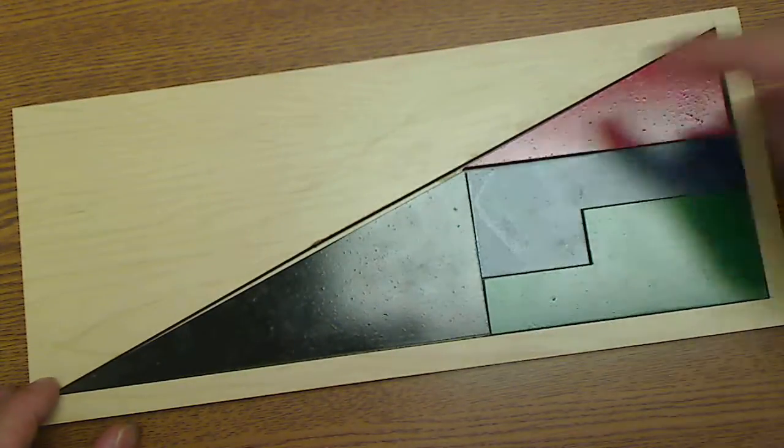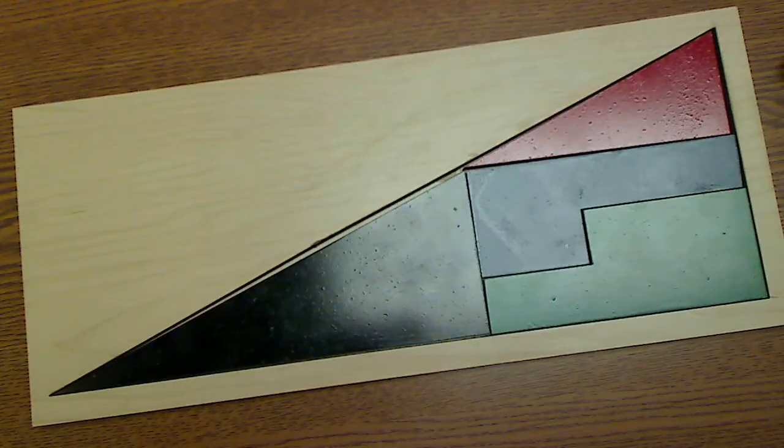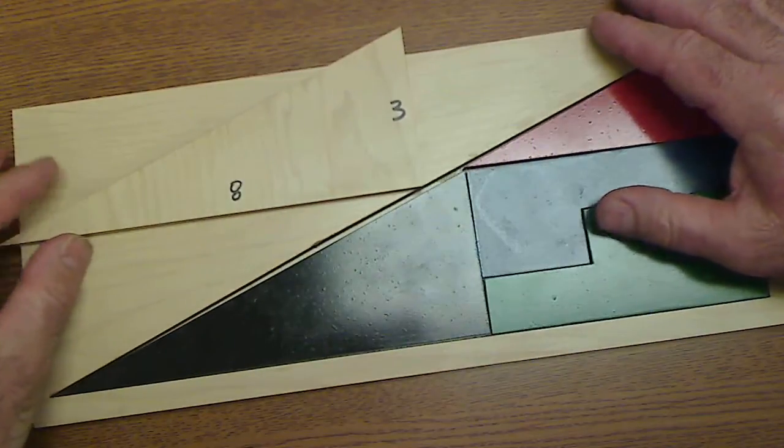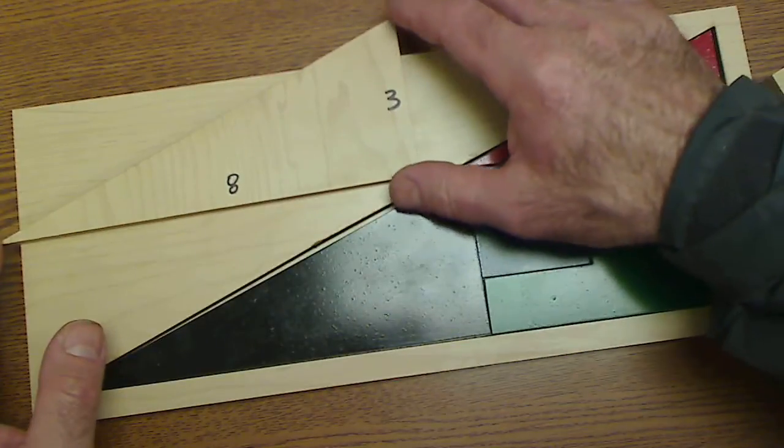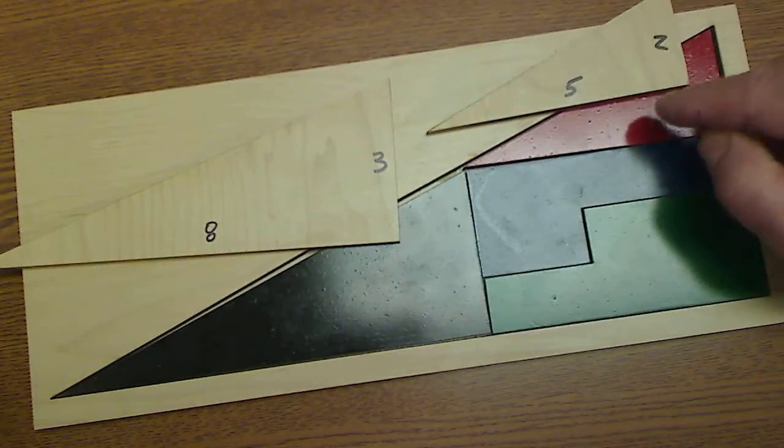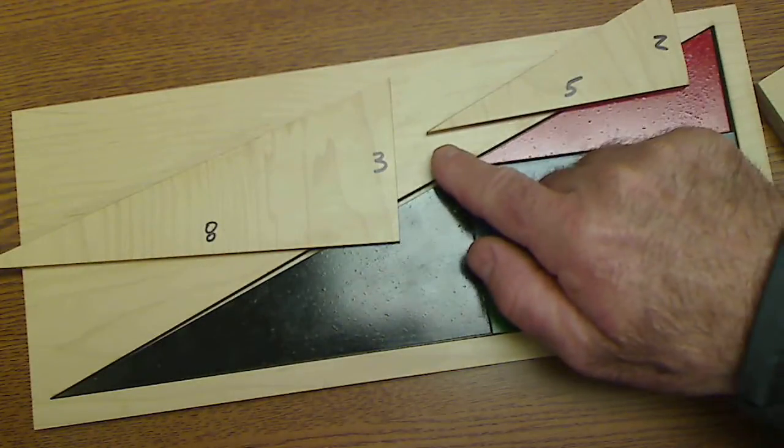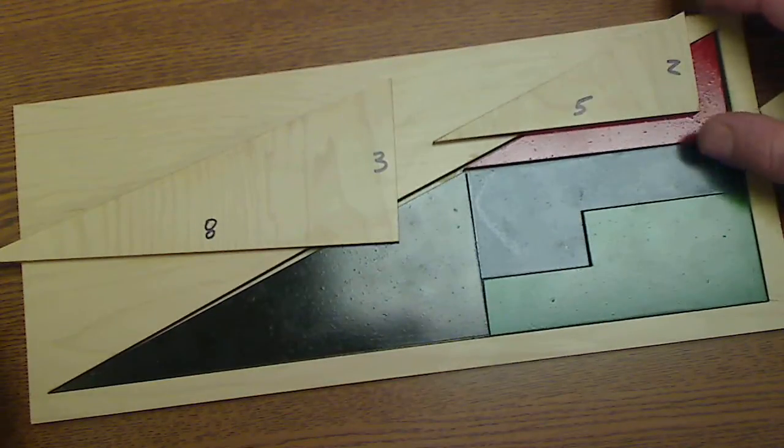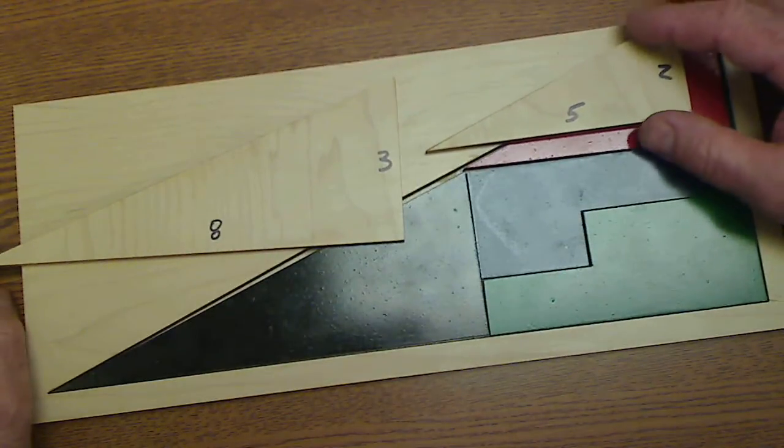And this triangle right here, the larger one, this larger black triangle has a run of eight and a rise of three and this red one on the top has a run of five and a rise of two in the smaller one. So they are in fact non-similar triangles.